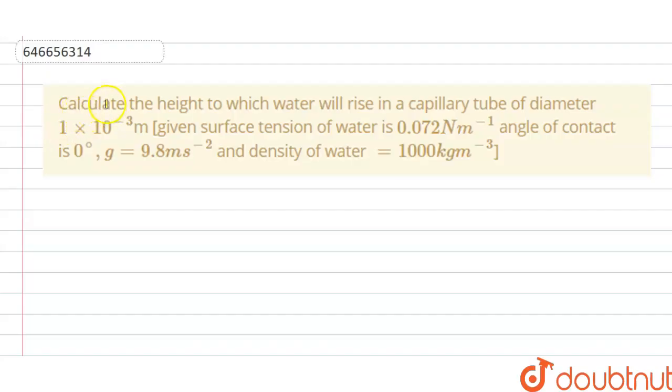Hello students, today our question is: Calculate the height to which water will rise in the capillary tube of diameter 1 × 10⁻³ meter. Surface tension of water is 0.072 N/m and the angle of contact is 0 degrees. g = 9.8 m/s² and density of water is 1000 kg/m³.